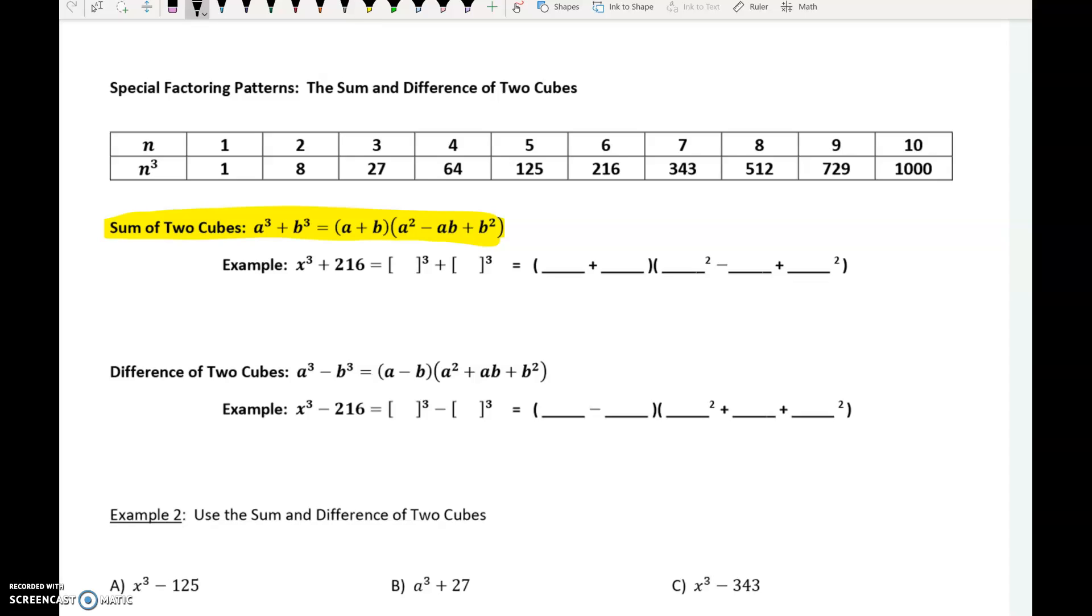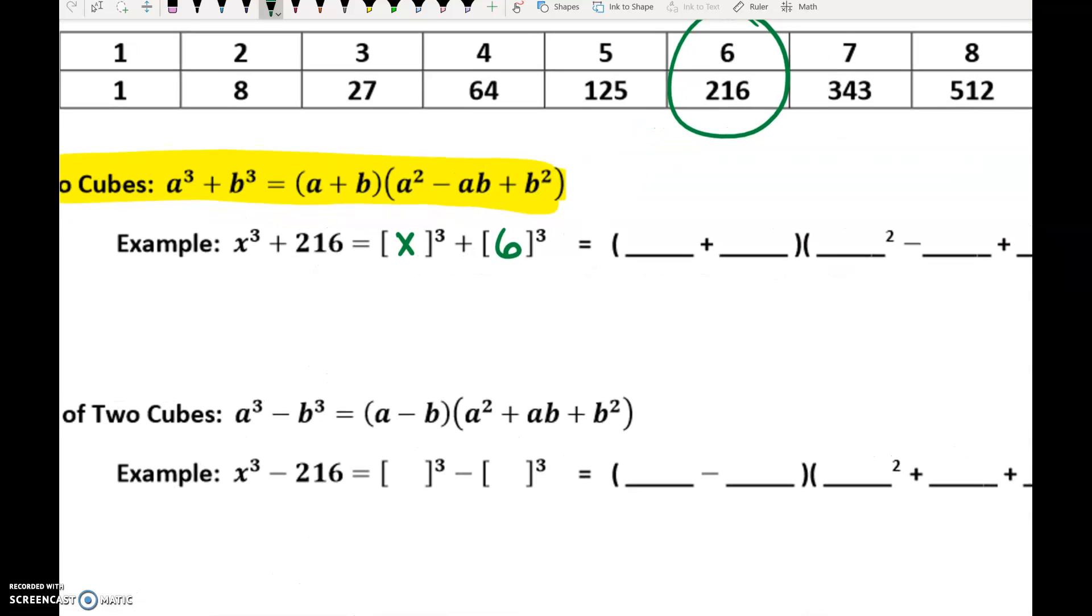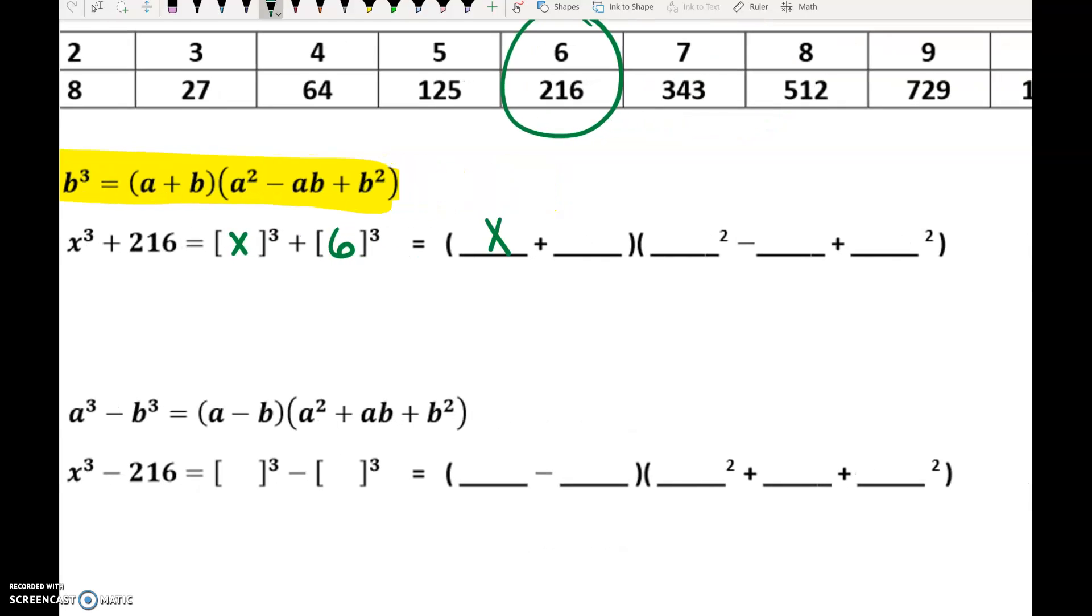Here's how this works. X cubed plus 216. X cubed, that's X cubed. 216 is 6 cubed. So everywhere in this formula that you see an A, you're going to put an X. Everywhere that you see a B, you're going to put a 6. So it says A plus B: X plus 6. Then it's got A squared, the square is already there. Minus AB, that'd be X times 6, which is 6X. And then the 6 squared. That ends up becoming X plus 6, X squared minus 6X plus 36.